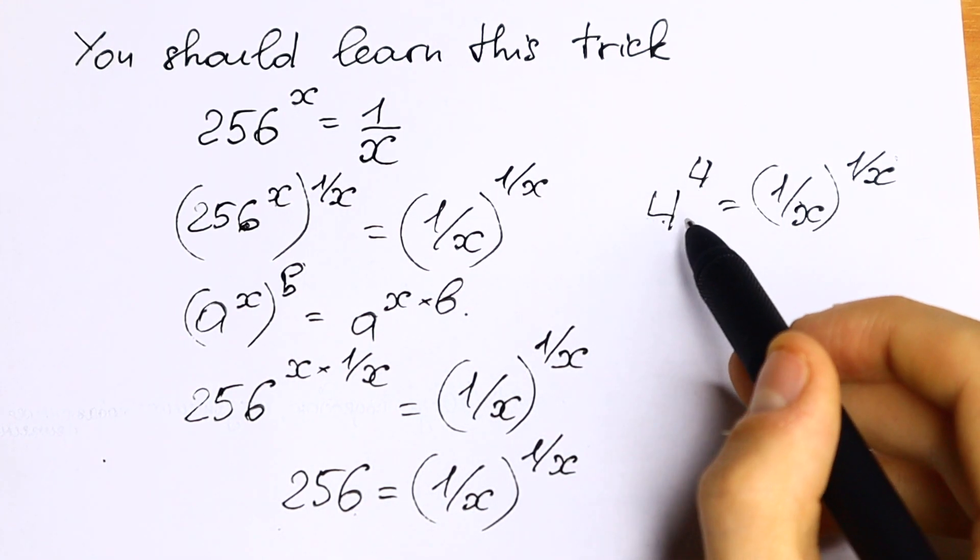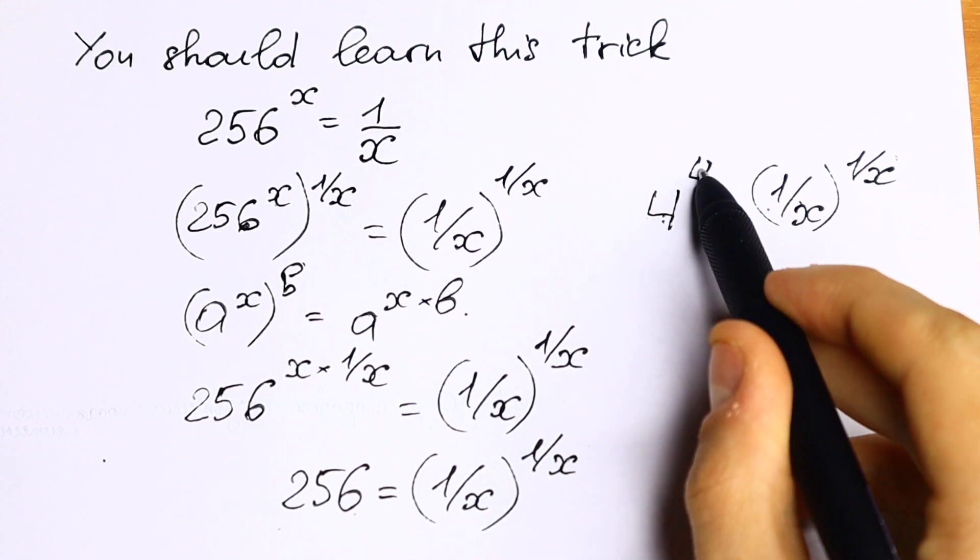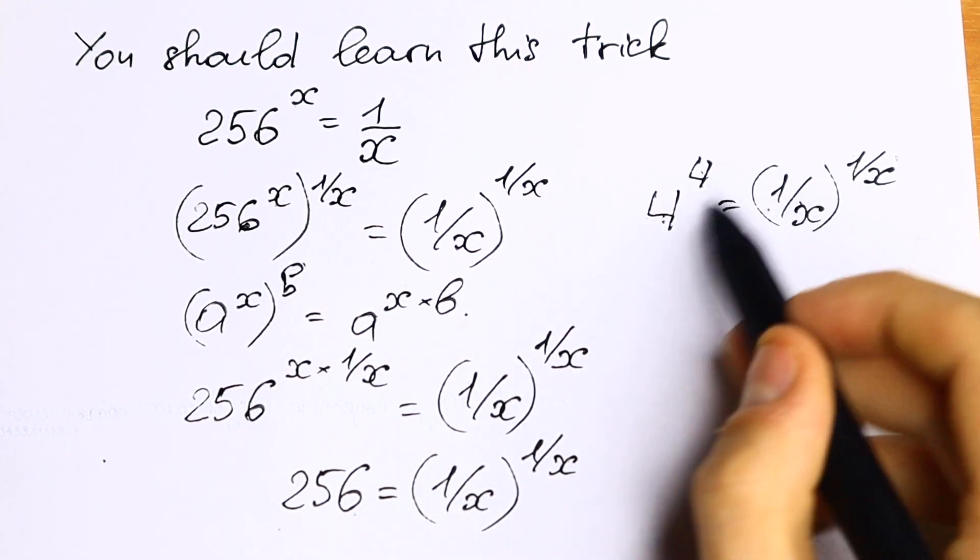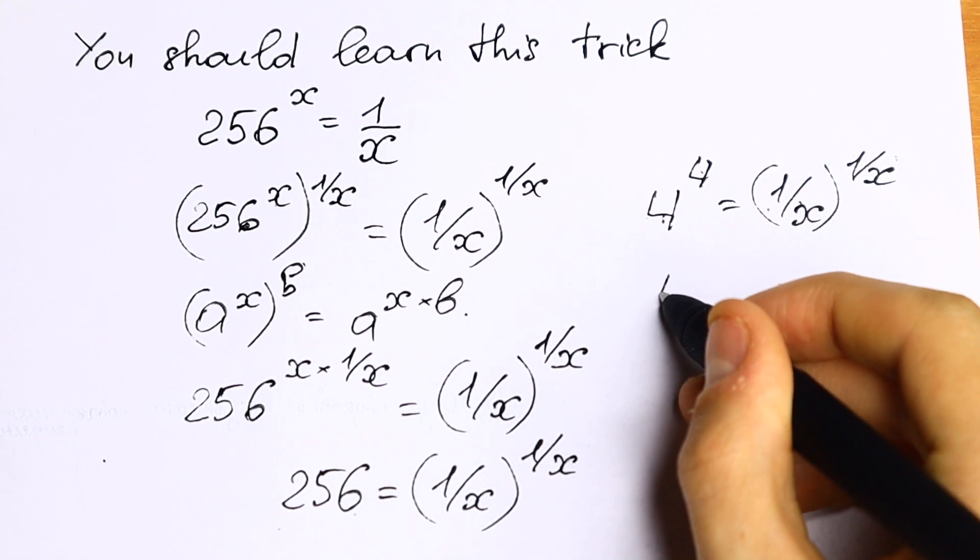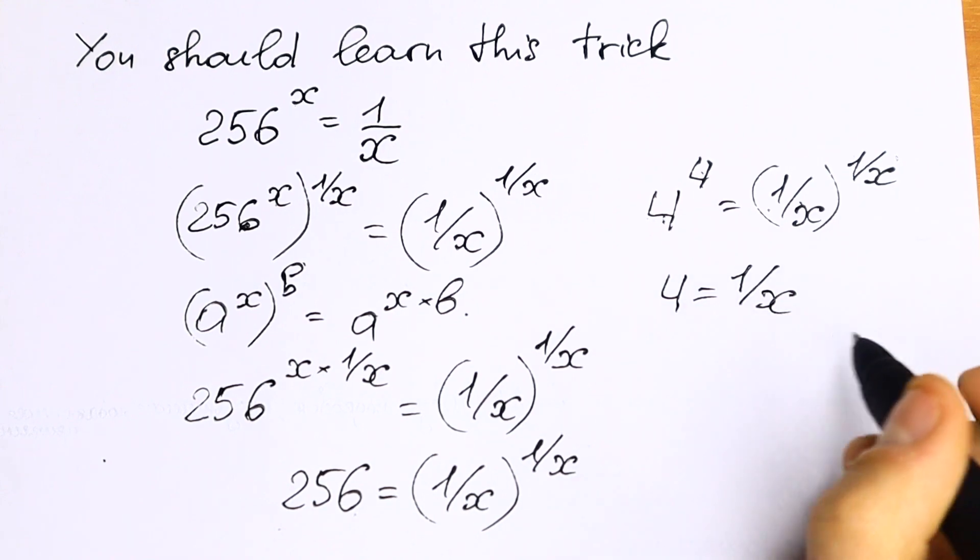We have our base equal to base and our exponent equal to exponent, because this is the one and only way that this equation works. So we have same base and same exponent, and we can write that 4 equal to 1 over x.